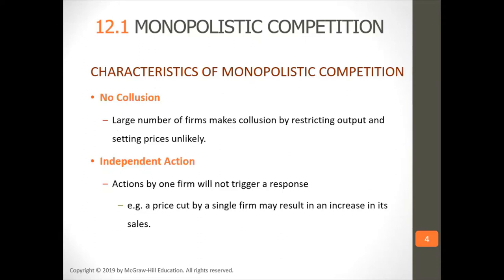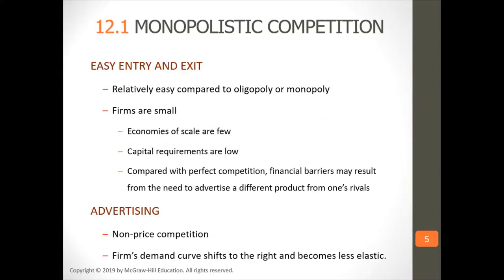There's no collusion in monopolistic competition because there's too many firms, so they're unable to restrict output and set prices — there's too much competition. Actions by one firm will not trigger a response, so a price cut by a single firm may result in increased sales. There's easy entry and exit compared to oligopoly or monopoly. Companies are small, economies of scale are few, capital requirements are low, and there's non-price competition in terms of advertising. The firm's demand curve shifts to the right and becomes less elastic.